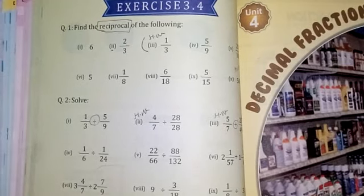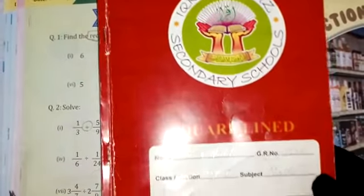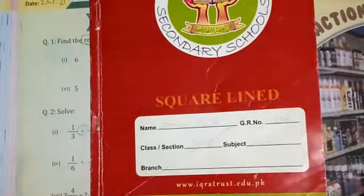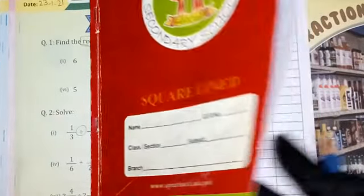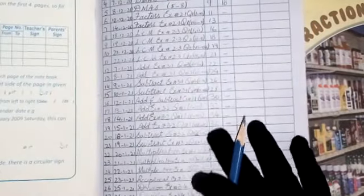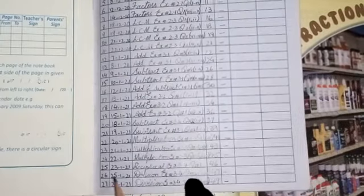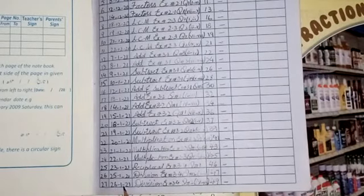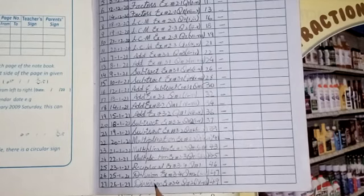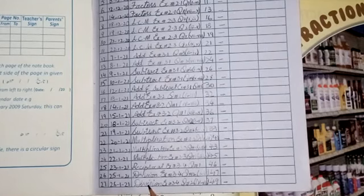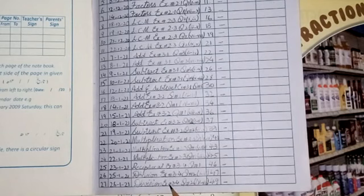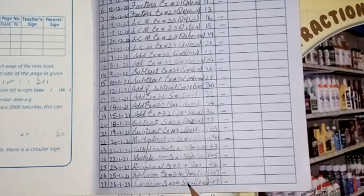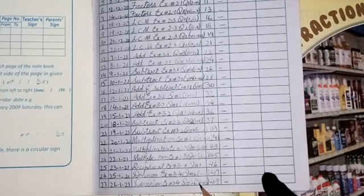Now come to the notebook. This is your scale line notebook. Serial number is 27. Date is 26 first 2021. We have a topic of division. Exercise is 3.4. Question number 2. Part number 4 to 7. Today we will take parts 4 to 7. And my page number is 49.